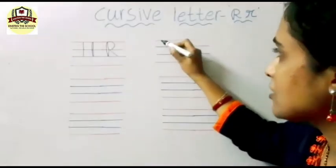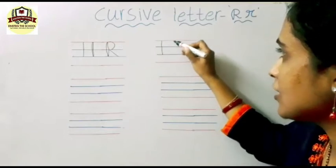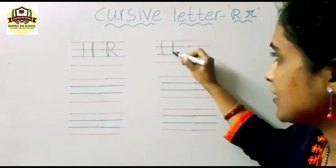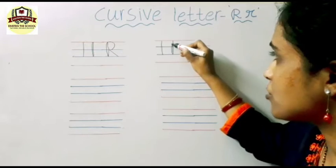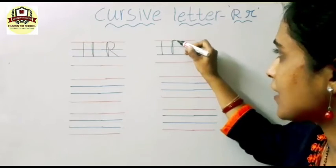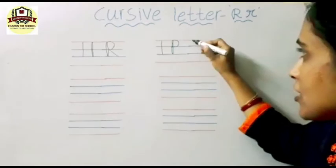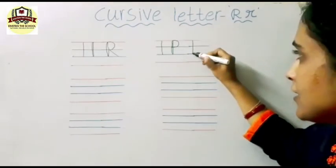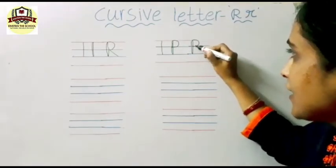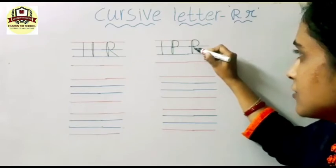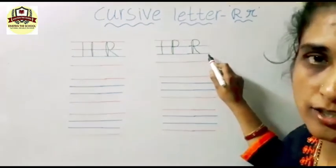Now see here one more time. First write the standing line. Now after writing the standing line, from down to up go and write the letter P. After writing the letter P, you should write the slanting line from here. This is the capital cursive R.